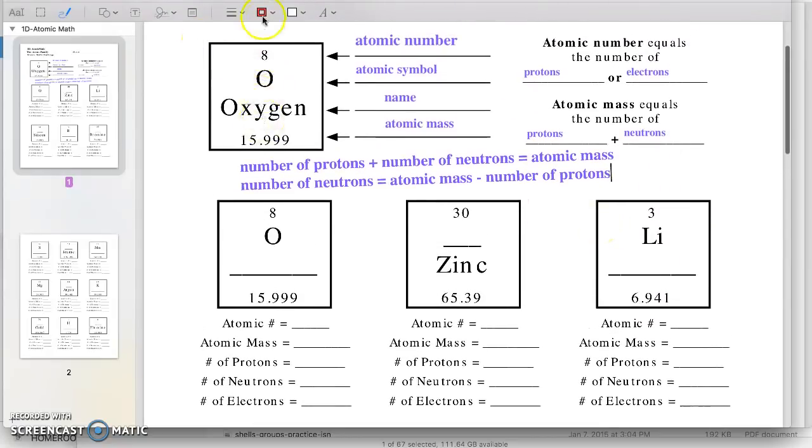Up here we learned there are four things in each box on the periodic table. The first thing you have to figure out is which one's missing. So our first one's pretty easy because we've already done oxygen. So our name is missing so we're just going to go ahead and write in the name for oxygen.